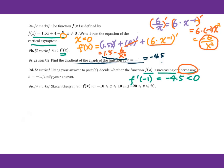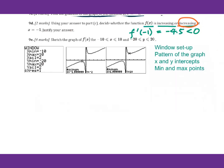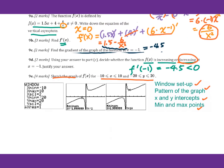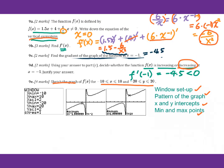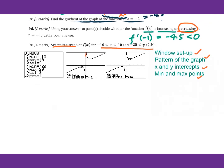For 9e, sketch the graph of f of x for x greater than or equal to negative 10 and less than or equal to 10, and y greater than or equal to negative 20 and less than or equal to 20. Remember when you sketch the graph: make sure the window setup is the same as given, and include the pattern of the graph, x and y intercepts, and minimum or maximum points. From the given function we already know we have a vertical asymptote line at x equals 0. We don't have an x-intercept and we don't have a y-intercept either.